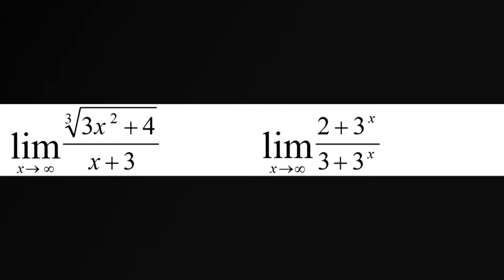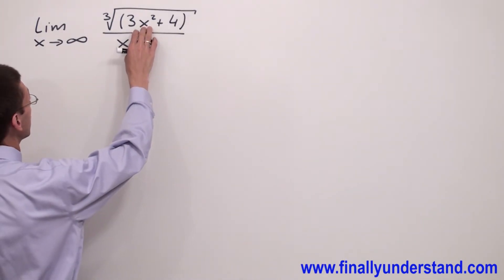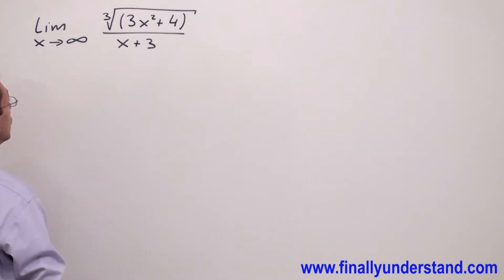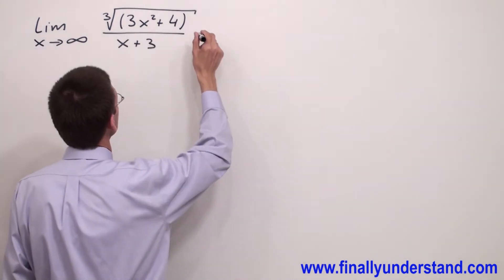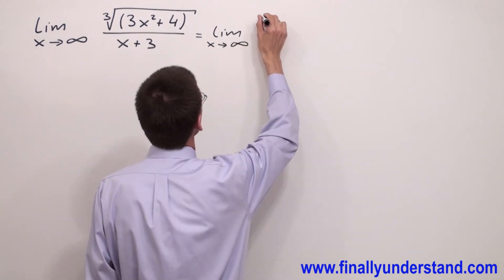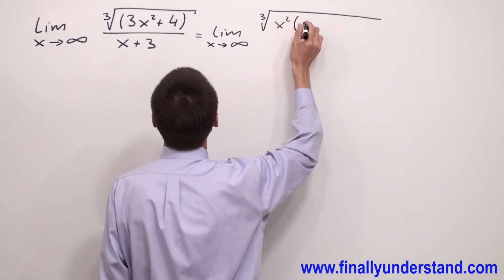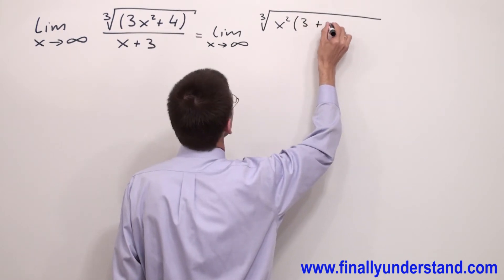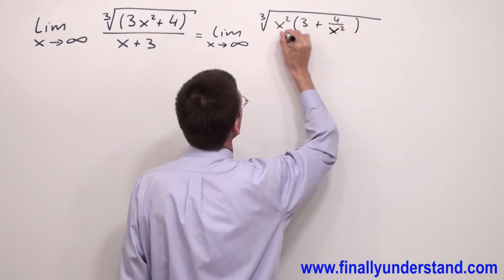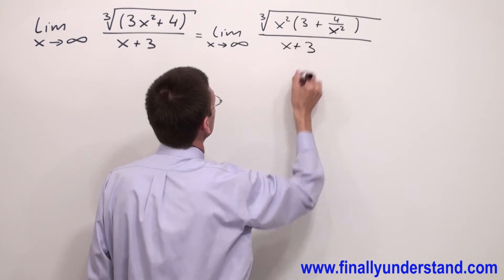Let's take a look at this example. I would first factorize x squared from the polynomial which is under the radical. I'm going to copy the limit with x going to infinity and I'm going to have the cube root of x squared, and inside the parenthesis I'm going to have 3 plus 4 over x squared, over x plus 3.